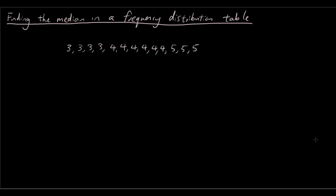So first of all let's have a look at our data. You can see all these numbers here are in our data set, and we have a lot of repetitions of the same numbers. So 3 has occurred 4 times, 4 has occurred 6 times, and 5 has occurred 3 times.